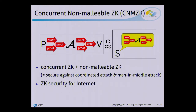Concurrent non-malleable zero-knowledge is a notion of zero-knowledge that provides security against an adversary that interacts with multiple provers and verifiers simultaneously. In particular, it provides concurrent zero-knowledge and non-malleable zero-knowledge — security against a coordinated attack in which the adversary attacks a prover by interacting with many provers simultaneously, and also security against a man-in-the-middle attack in which the adversary attacks a verifier by interacting with the prover simultaneously.